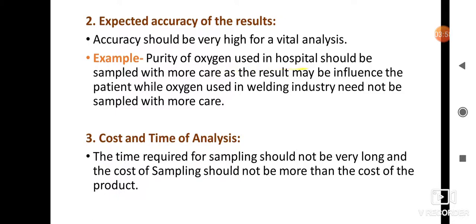For example, the purity of oxygen used in hospitals should be very high and sampled with more care, as the results may influence the patient. Whereas oxygen used in the welding industry need not be sampled with more care — it does not need to be very accurate.